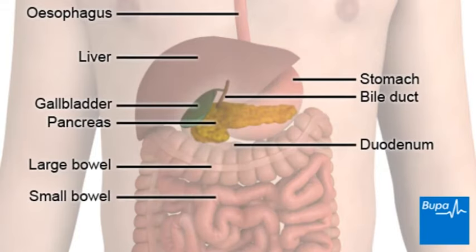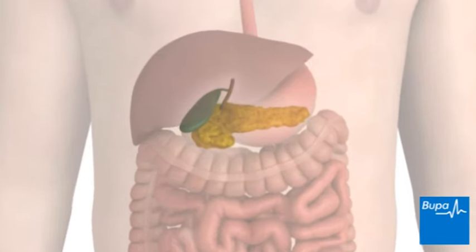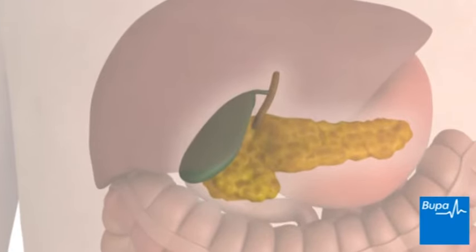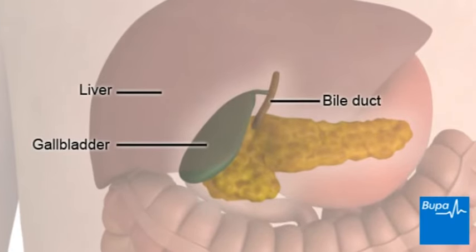Here we show the position of the gallbladder and the surrounding structures. The gallbladder is a small pear-shaped pouch in the upper right part of your abdomen. It stores bile produced by the liver. Bile is a digestive fluid that helps to break down fatty food. Your body can function without the gallbladder if it needs to be removed.